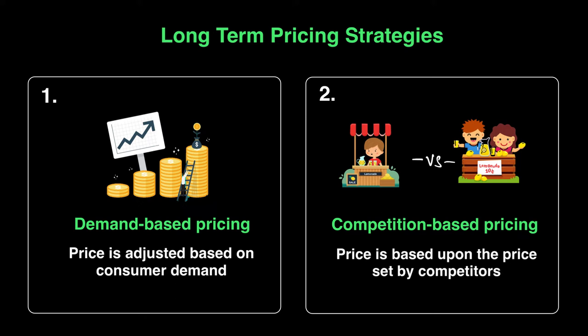An example would be Uber and Kareem. Whenever they're operating, they try to make sure they're not fighting against one another and not getting into price wars. There is one more scenario in which competition-based pricing plays out, and that is something we know as destroyer pricing. Destroyer pricing is when you see another business doing well and you reduce your own price much, much lower than what the other business is selling at.